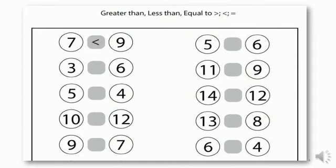Okay kids, we're going to solve this worksheet together. You are the alligator now — remember, the alligator likes to eat the bigger number. The first one is done for you. On the left side we have number seven and on the right side we have number nine. Which number is bigger — seven or nine? Of course it's nine, so you see the sign: the alligator's mouth is open towards the nine.